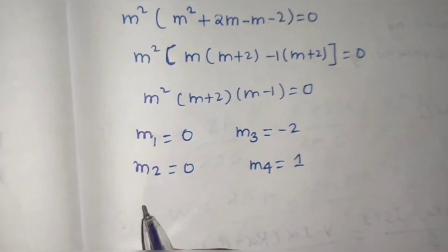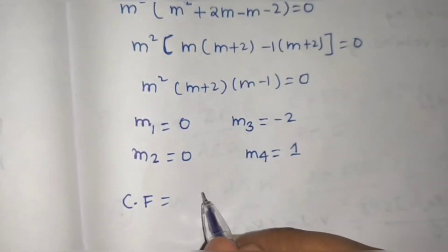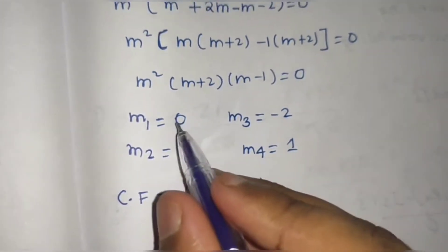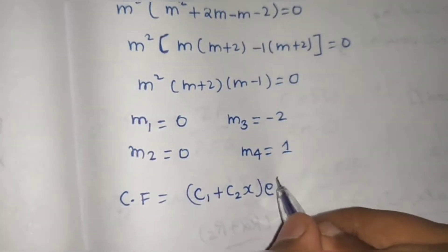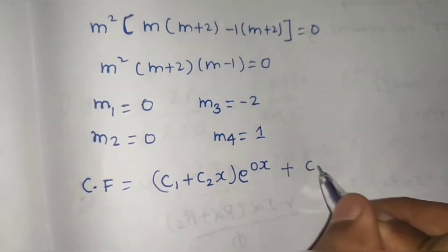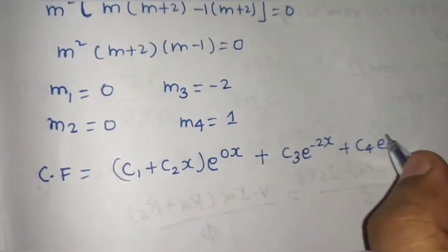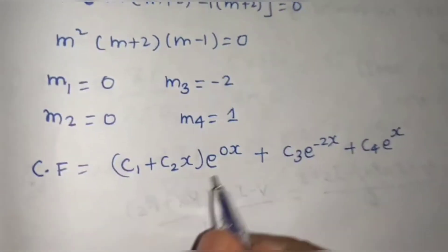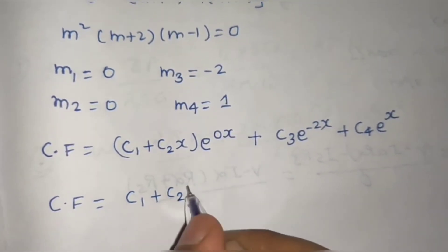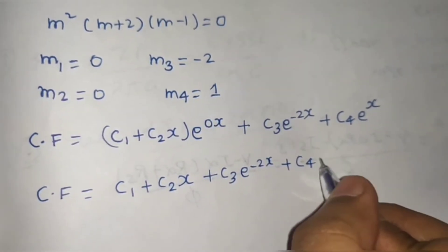For repeated roots, the complementary function rule gives (c₁ + c₂x)e^(mx), where m = 0, so e^(0·x) = 1. For the normal real roots we have c₃e^(-2x) + c₄e^x. So the complementary function is: CF = c₁ + c₂x + c₃e^(-2x) + c₄e^x.